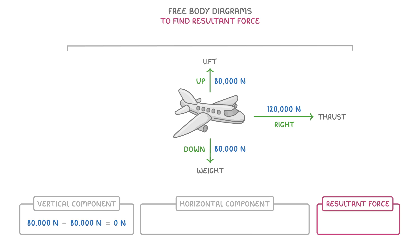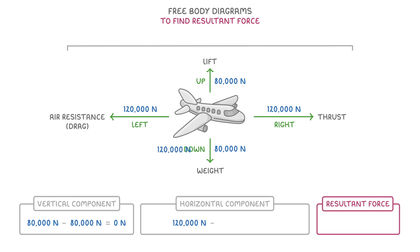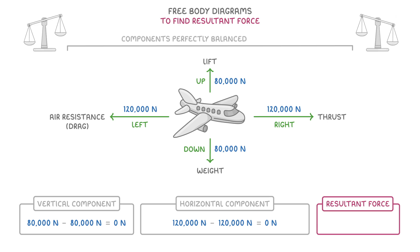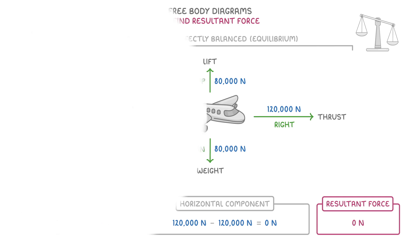If though we had a slightly different scenario, where the air resistance was 120,000 newtons instead, then we'd be doing 120,000 minus 120,000, and so the horizontal resultant force would be zero. Now both the horizontal and vertical components will be perfectly balanced, and so we would say that the object is in equilibrium, because there's no resultant force acting on it.